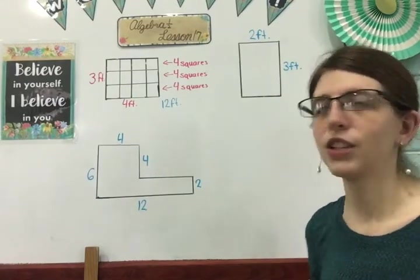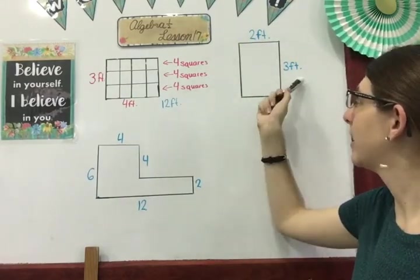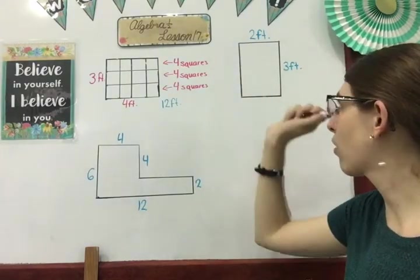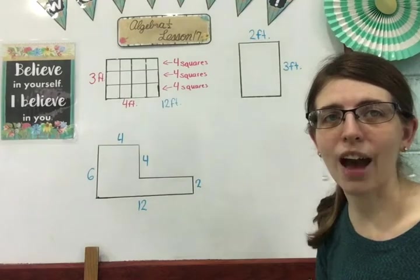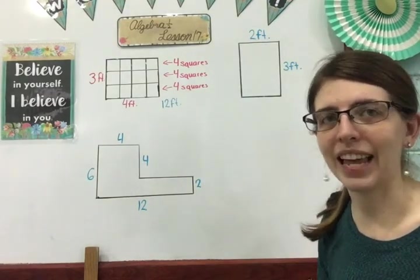Here I have another rectangle. I have two feet and three feet. So that means that it's two feet across and three feet down. My formula to find the area of this space is length times width.